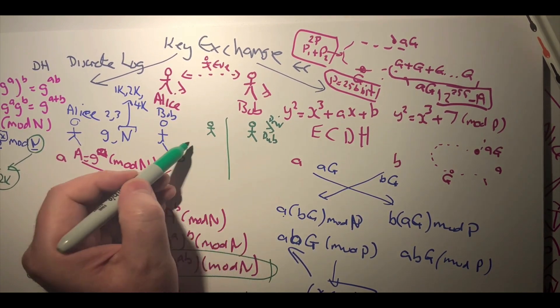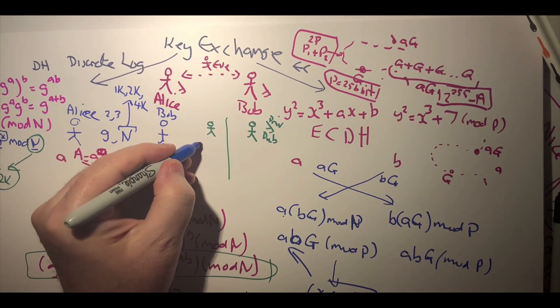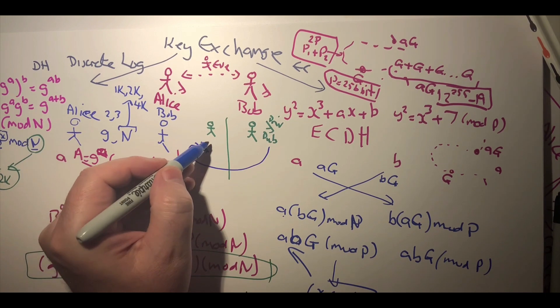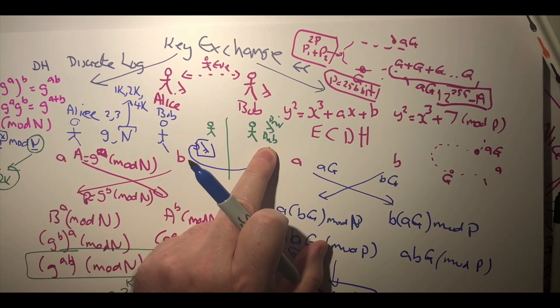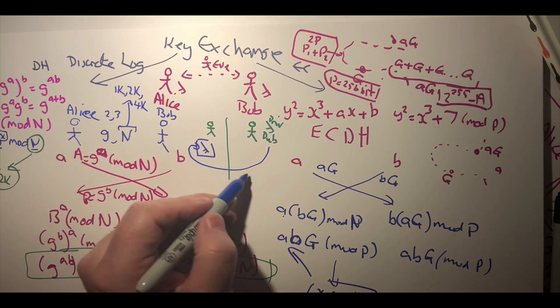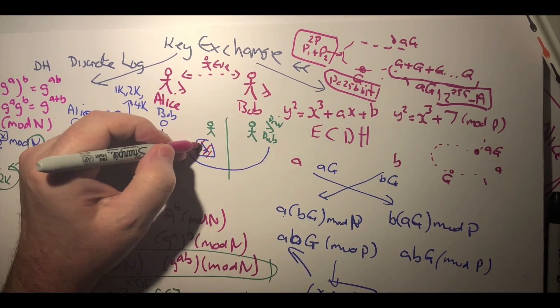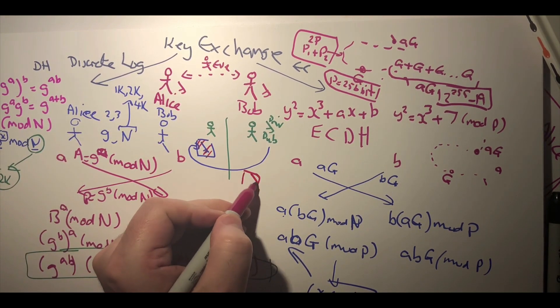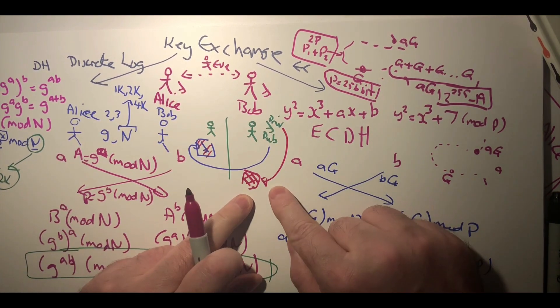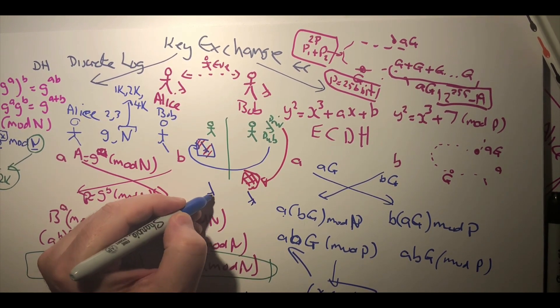What happens is that one of them will generate a key to be used, and then Alice will encrypt that key with Bob's public key. On the other side, Bob will then decrypt that encrypted key with his private key, and in the end they will both use the same key.